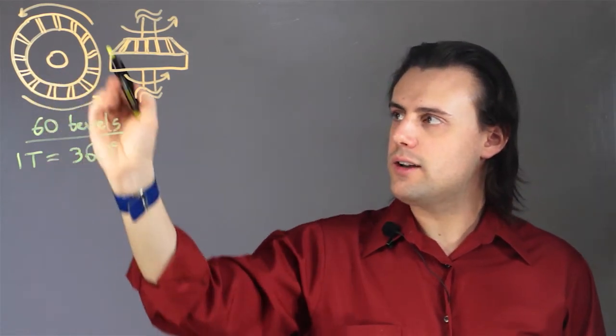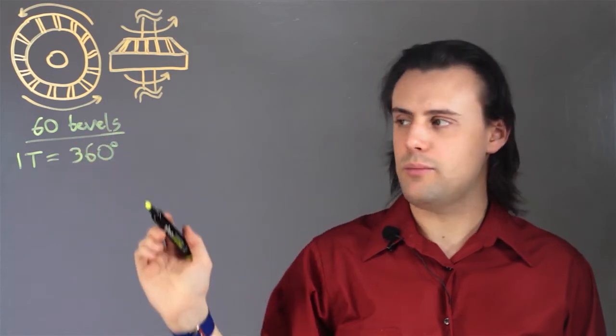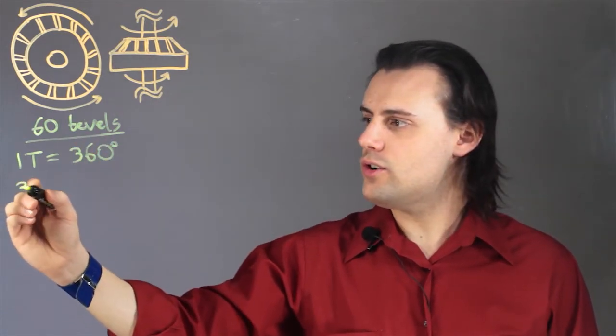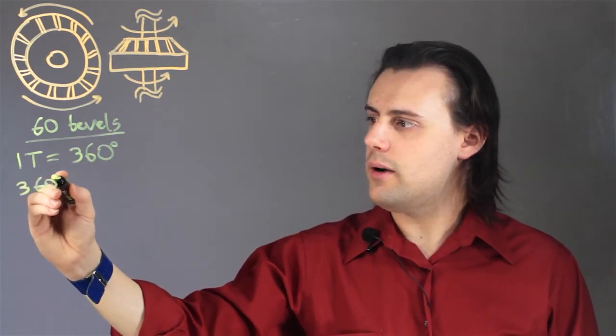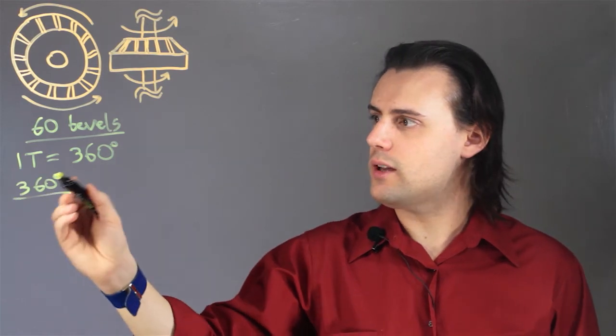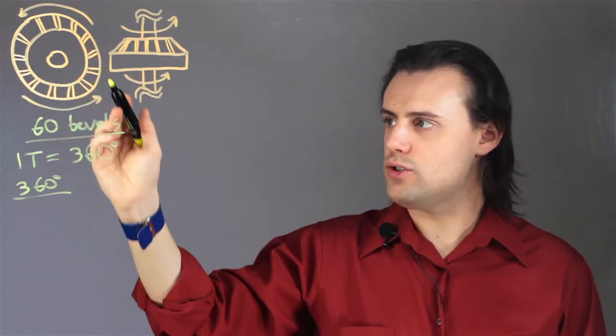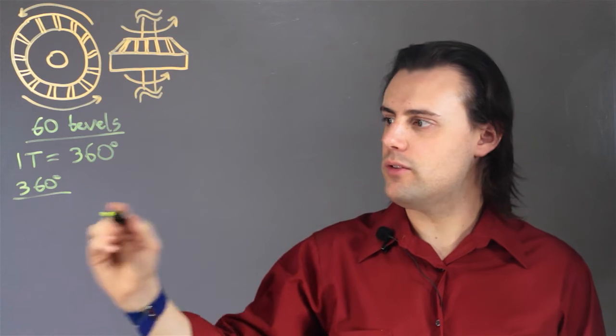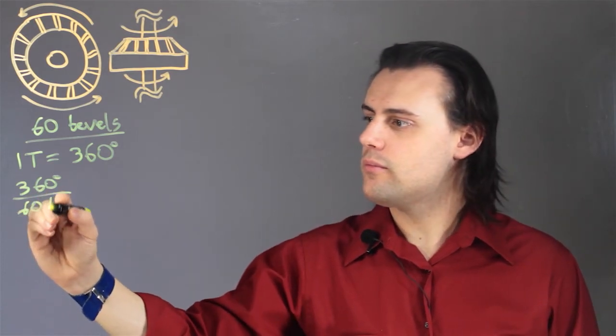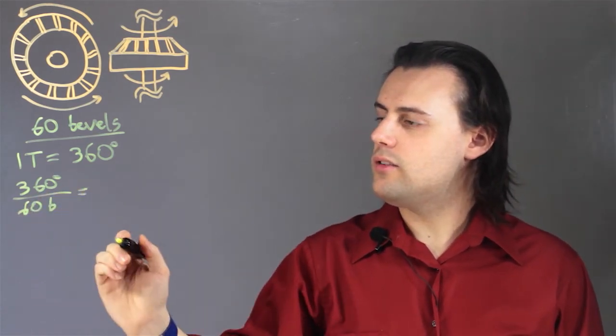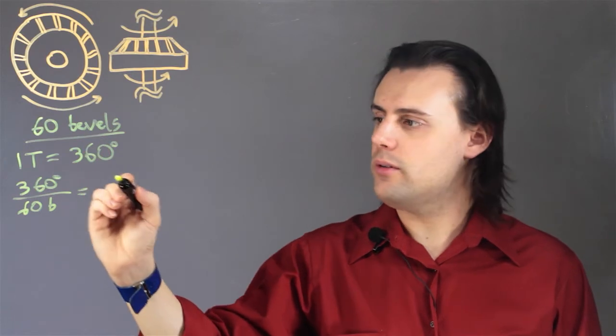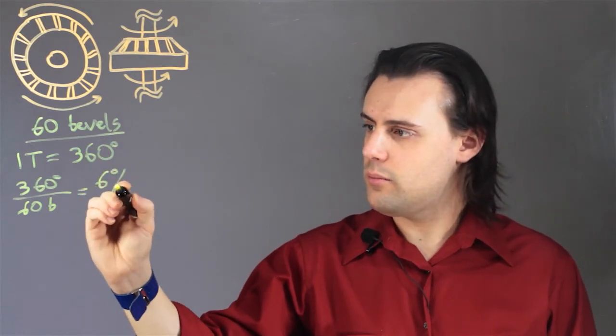If we consider a bevel gear with 60 bevels, then the conversion can be found by dividing the total number of degrees in one revolution by the total number of bevels in the gear. And this turns out to be, for this example, 6 degrees per bevel.